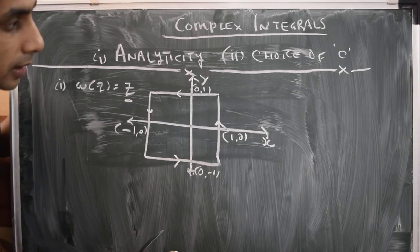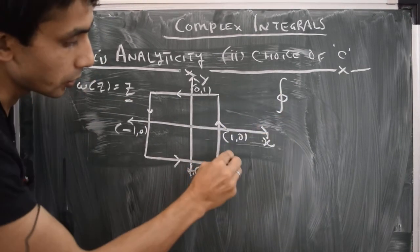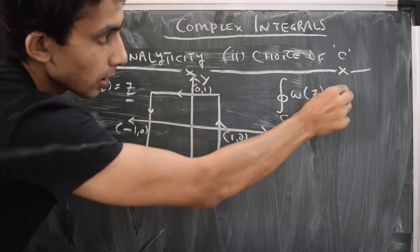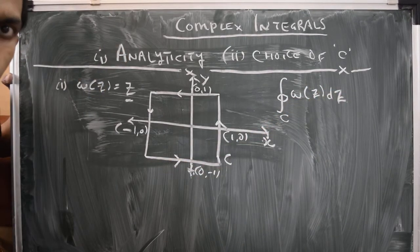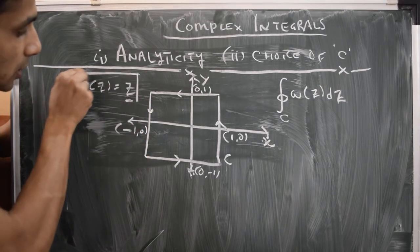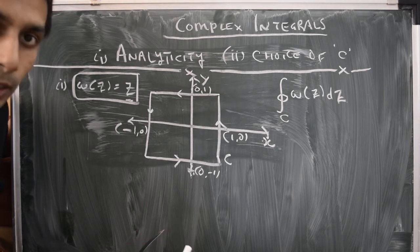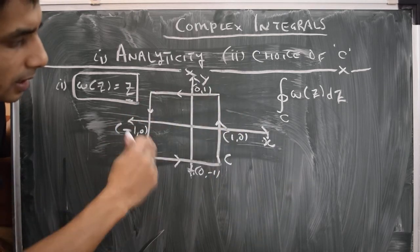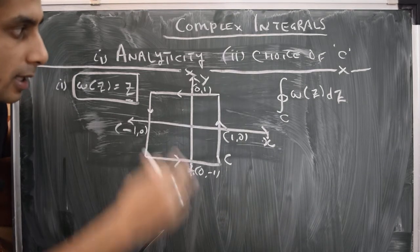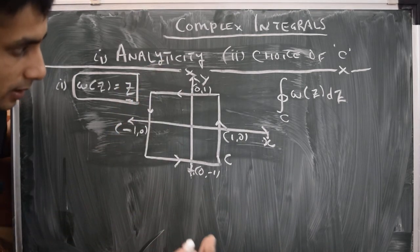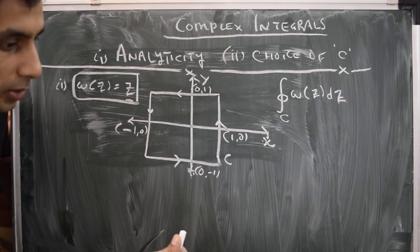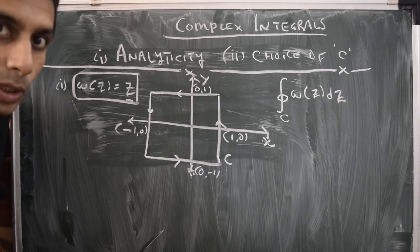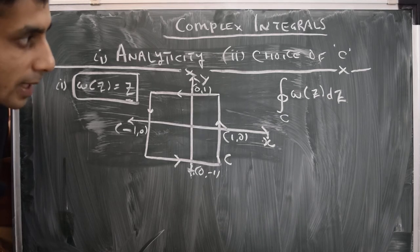Our task is to evaluate the integral of W(z) over this contour c. Now, W(z) = z is a complex analytic function, and the contour we've chosen is simple with no self-intersections. So we would expect Cauchy's integral theorem to apply here. Let's verify this by explicitly evaluating the integral.